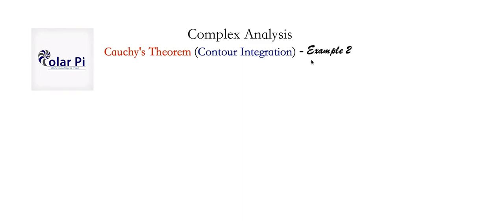These examples are very intentionally constructed, so watch them in order. First watch example 0 where we prove Cauchy's theorem for contour integration, then watch the last example where you will have learned details I'm not going to repeat in this video. So this is what we're doing here: evaluating this integral where m takes on 1, 2, and so on — m is the natural numbers up to capital M, as large as we'd like.